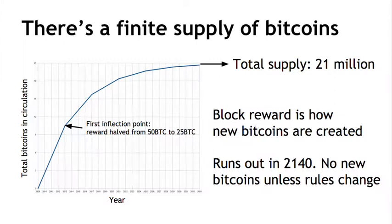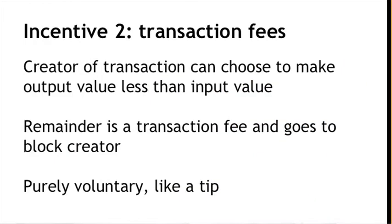This new block creation reward is actually going to run out. Does that mean that the system will stop working and become insecure because nodes no longer have the incentive to behave honestly? Well, not quite, because this is only the first of two incentive mechanisms. There is quite another incentive mechanism called the transaction fee.